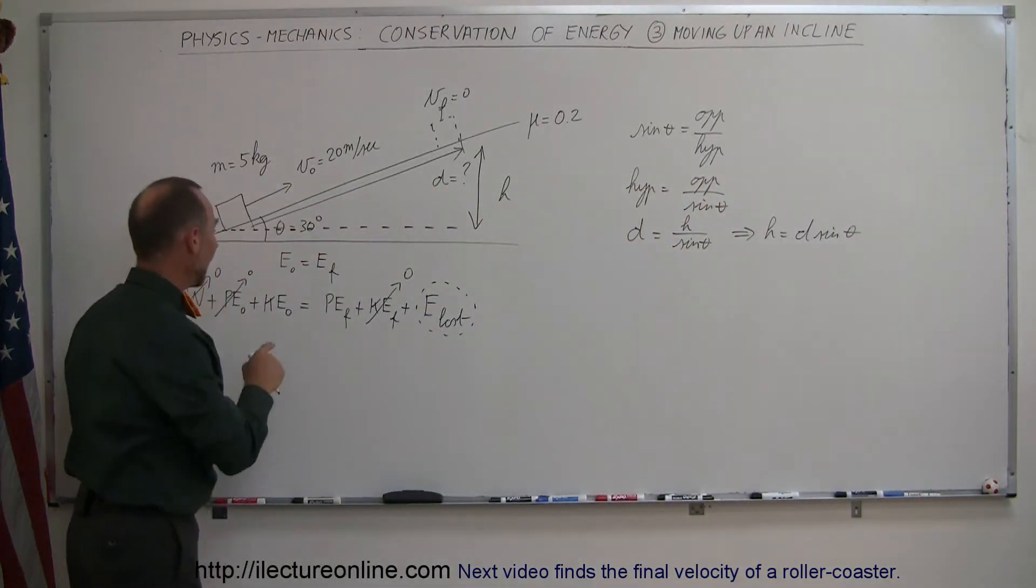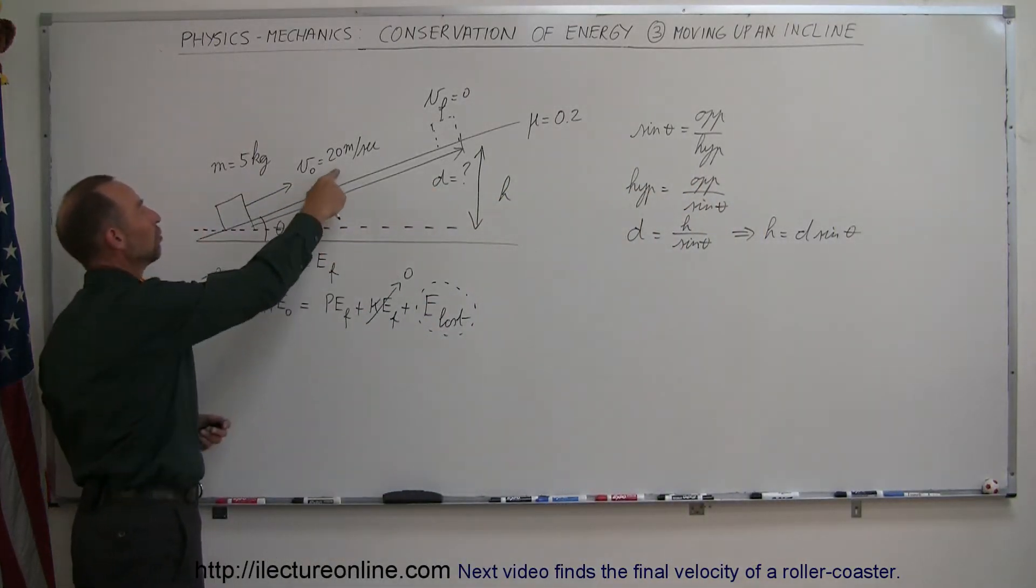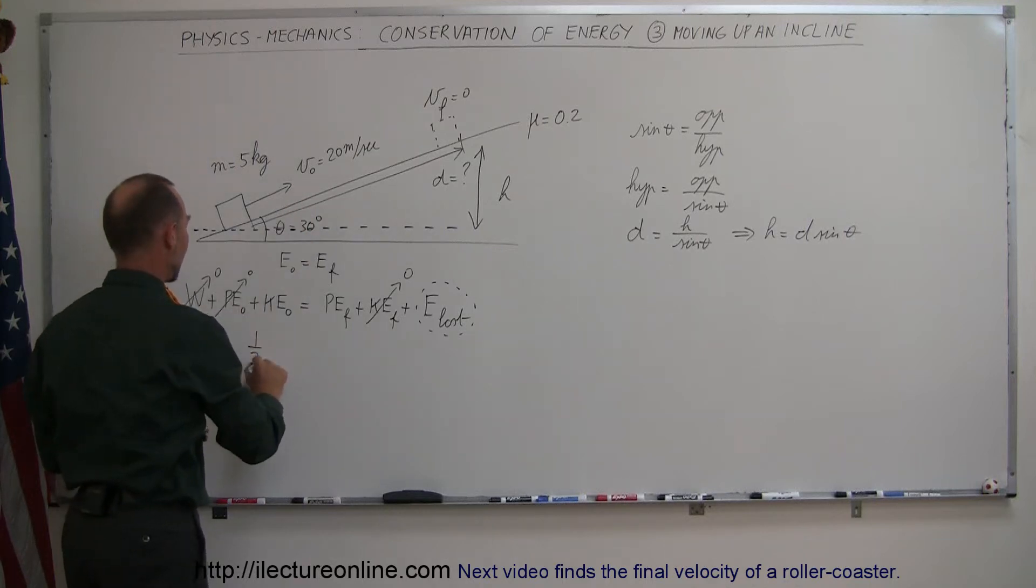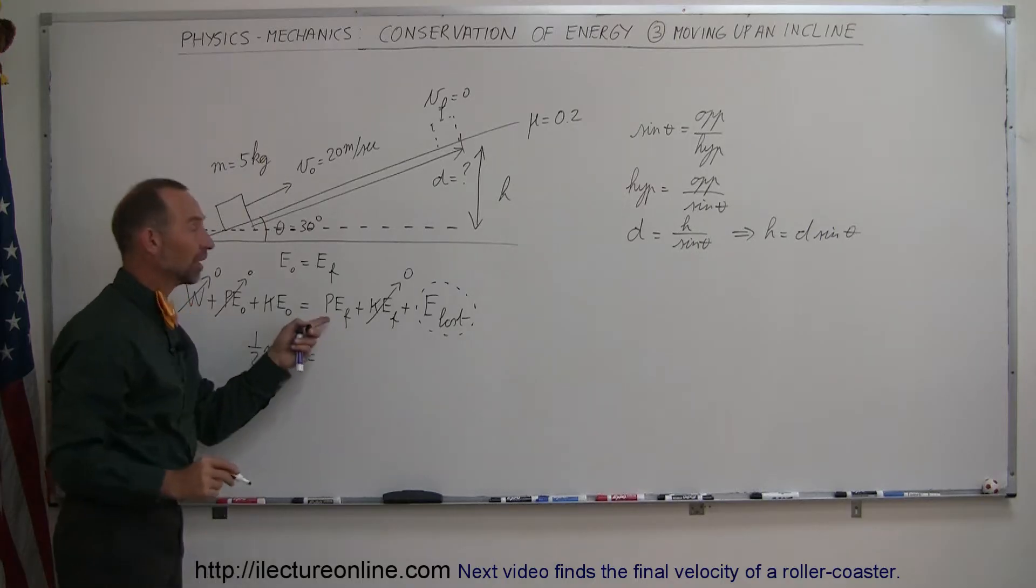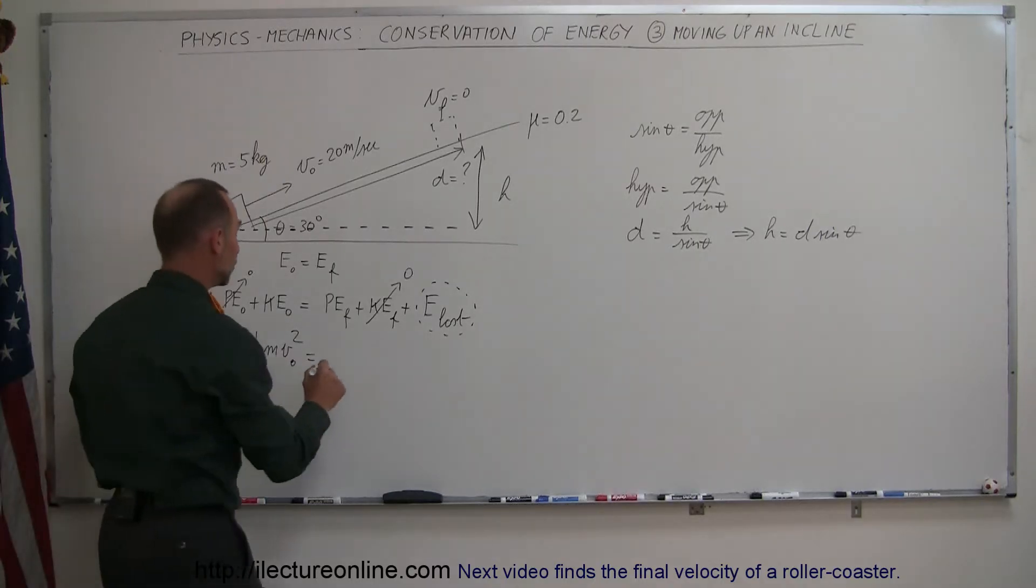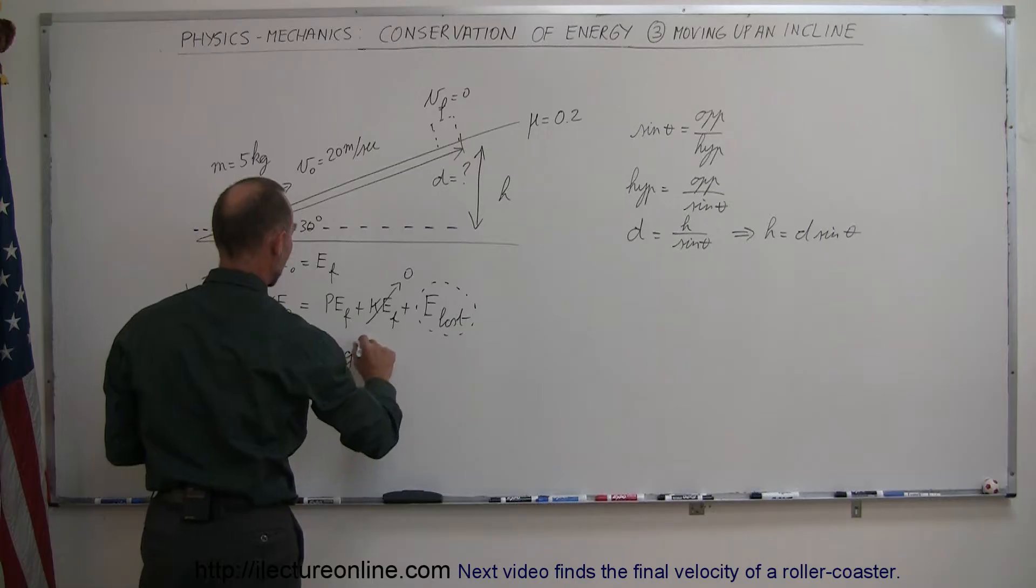It has initial kinetic energy because it's moving. So we can say that it has 1/2 mv initial squared. That equals the final potential energy, which is going to be the final mgh. So mgh final.